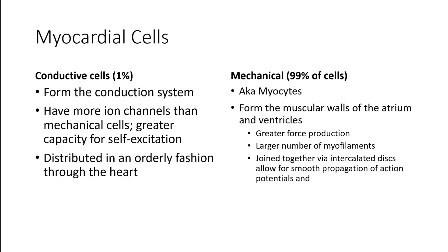The first thing we'll review is the two types of cells that comprise the heart — the myocardial cells. The two types are conductive cells, which form the conduction system, and mechanical cells. The conductive cells have a higher number of ion channels and a greater capacity for self-excitation. You can think of these as forming basically the nervous system that runs through the heart, distributing signals in an orderly, stereotyped fashion. Mechanical cells form the thick muscular walls of the atria and ventricles.